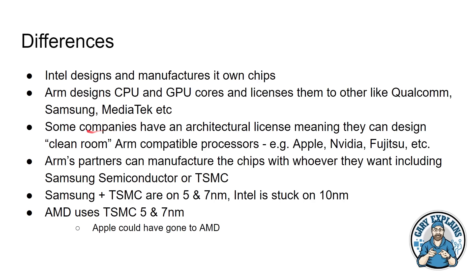Another thing to note is that some companies have an architectural license, meaning they can design clean-room ARM processors. Apple has one of those, as do Nvidia, Fujitsu, and Samsung — all allowed to design their own ARM-compatible processors under a licensing arrangement with ARM. And those companies can use the latest nodes like 5nm and 7nm from Samsung Semiconductor and TSMC, whereas Intel is still stuck on 10nm. This is really hurting Intel's business and is one of the reasons Apple is moving away from Intel. AMD, meanwhile, is already using TSMC's 5nm and 7nm nodes.